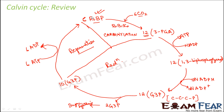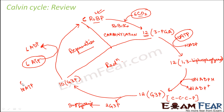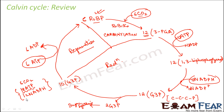The cycle started with ribulose biphosphate and ends at ribulose biphosphate. To produce one molecule of glucose you need six molecules of CO2, 12 ATP during reduction plus 6 ATP during regeneration — a total of 18 molecules of ATP — and 12 molecules of NADPH. This shows how much energy is required, demonstrating the significance of the light reaction, which produces this ATP and NADPH. Also note that more molecules of ATP are needed than NADPH.